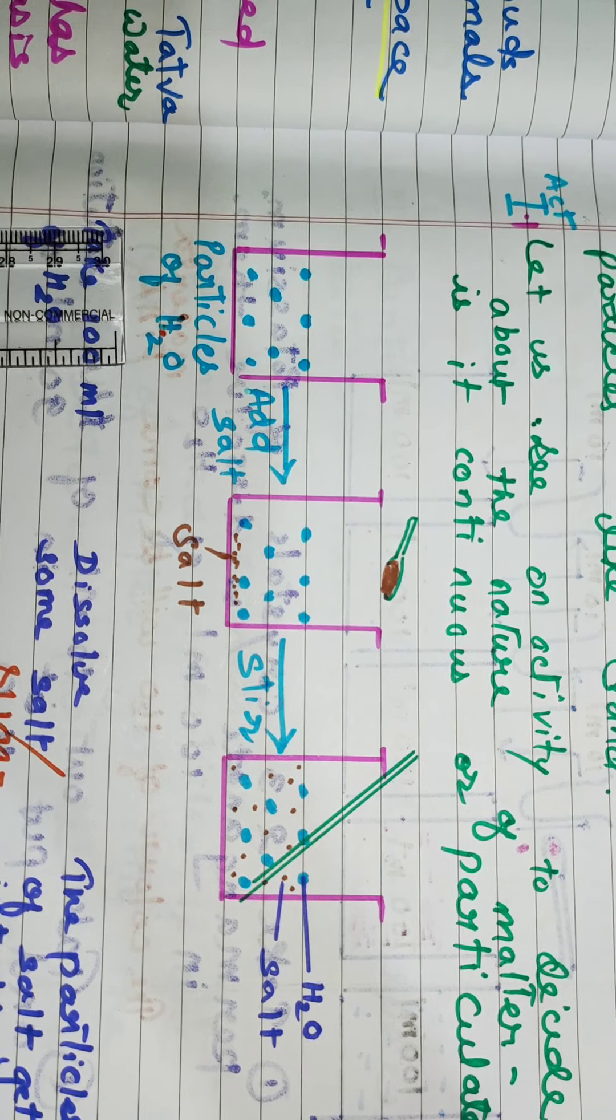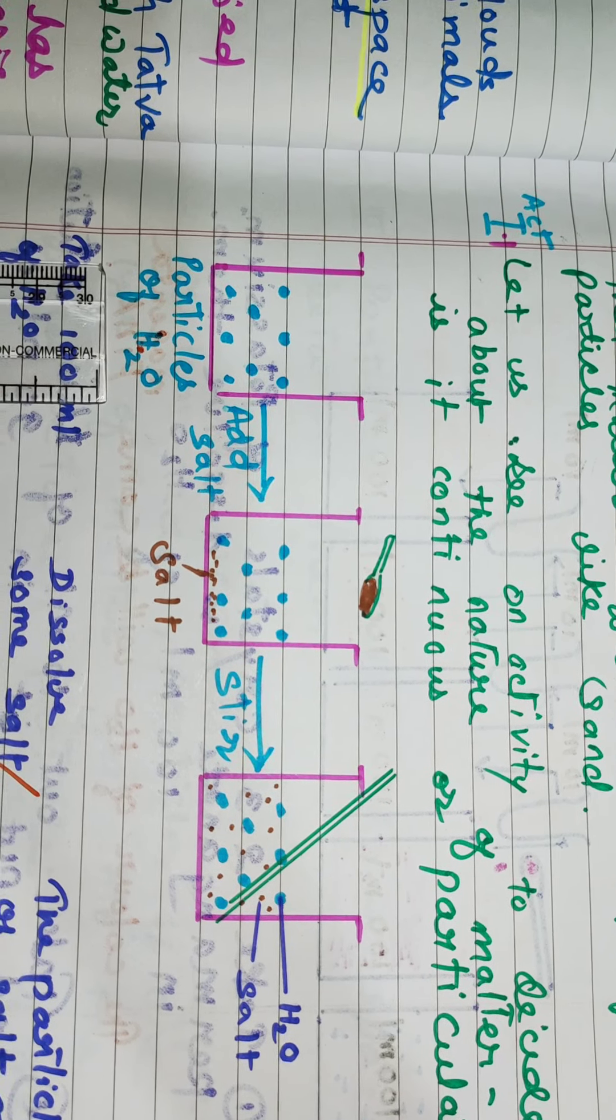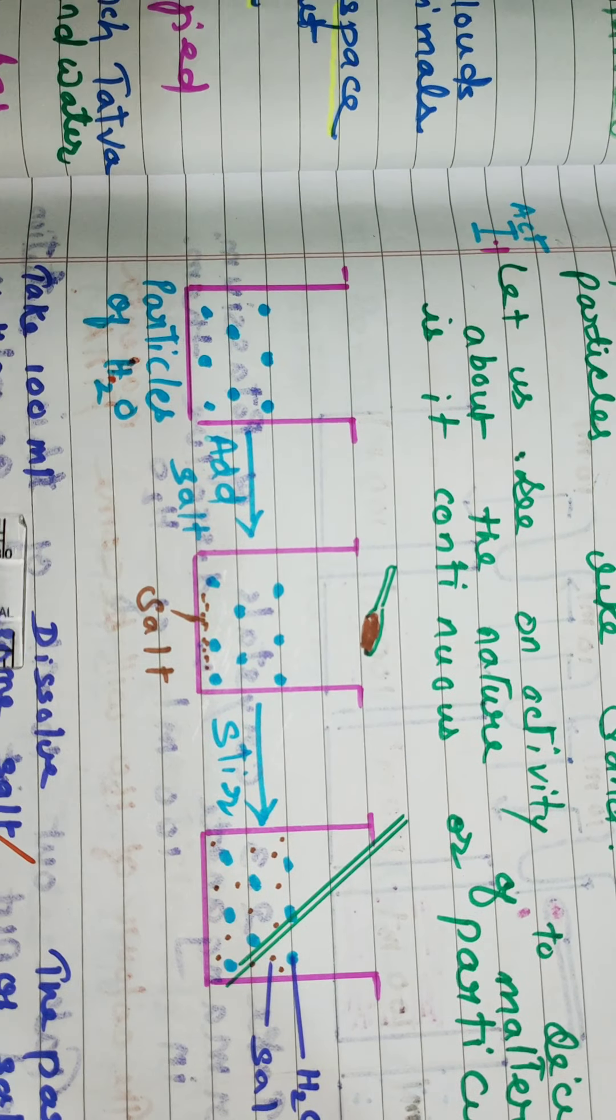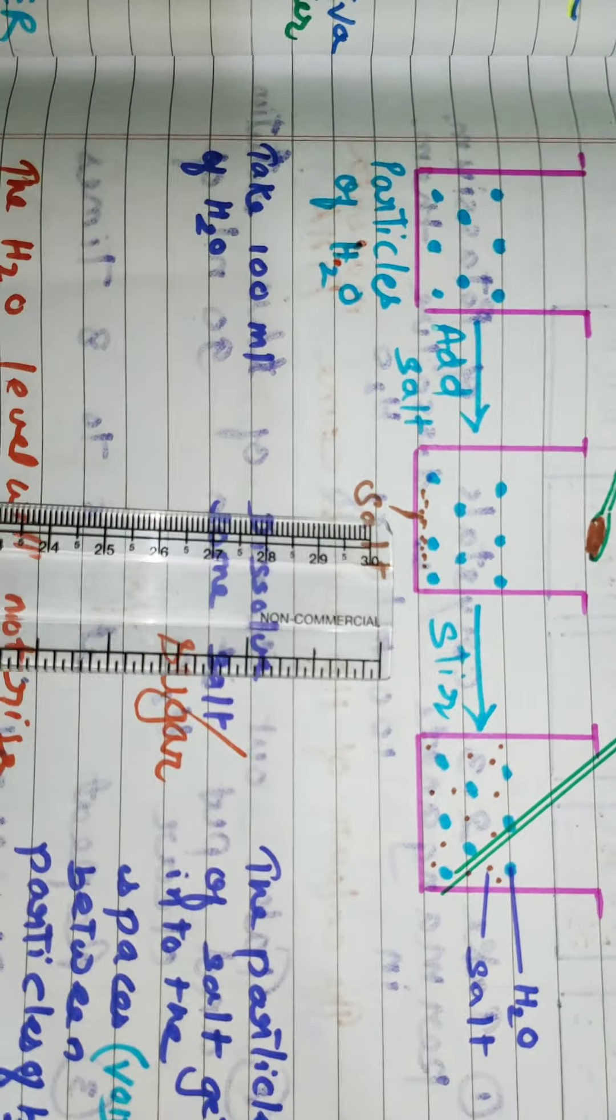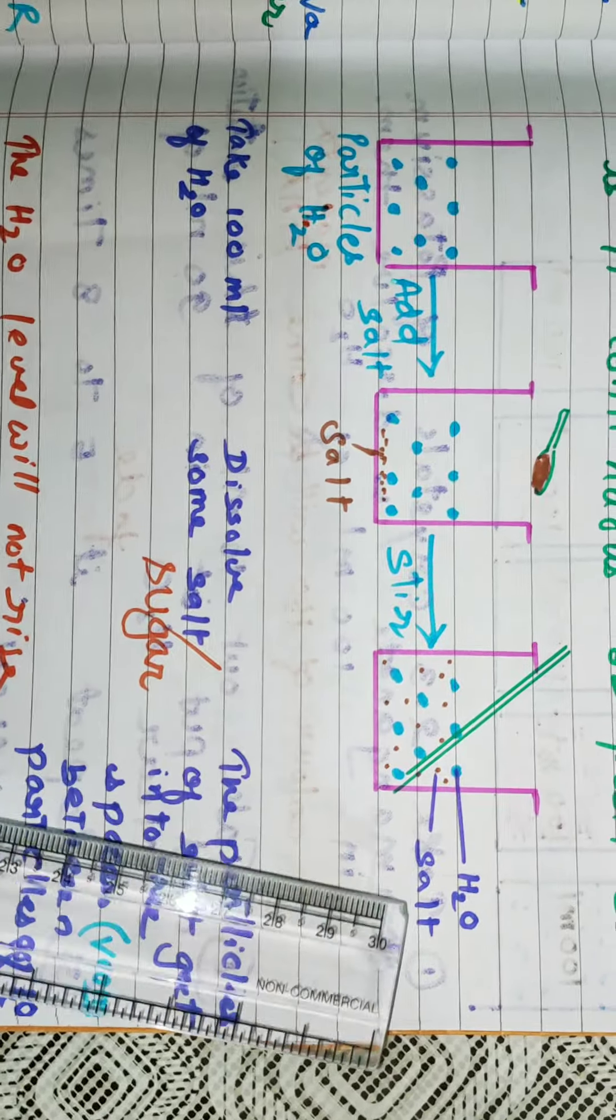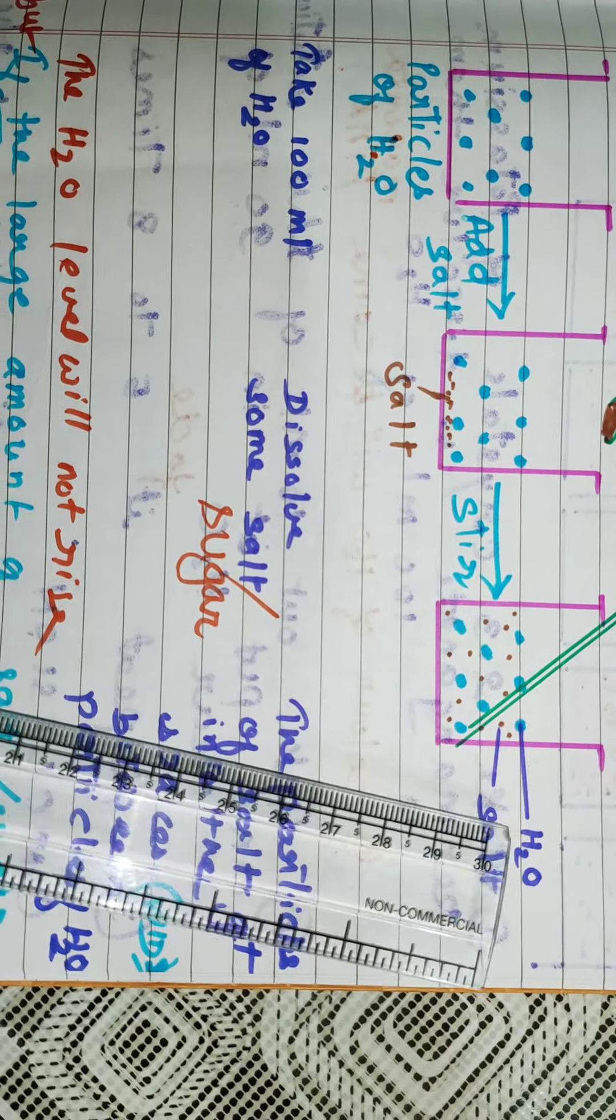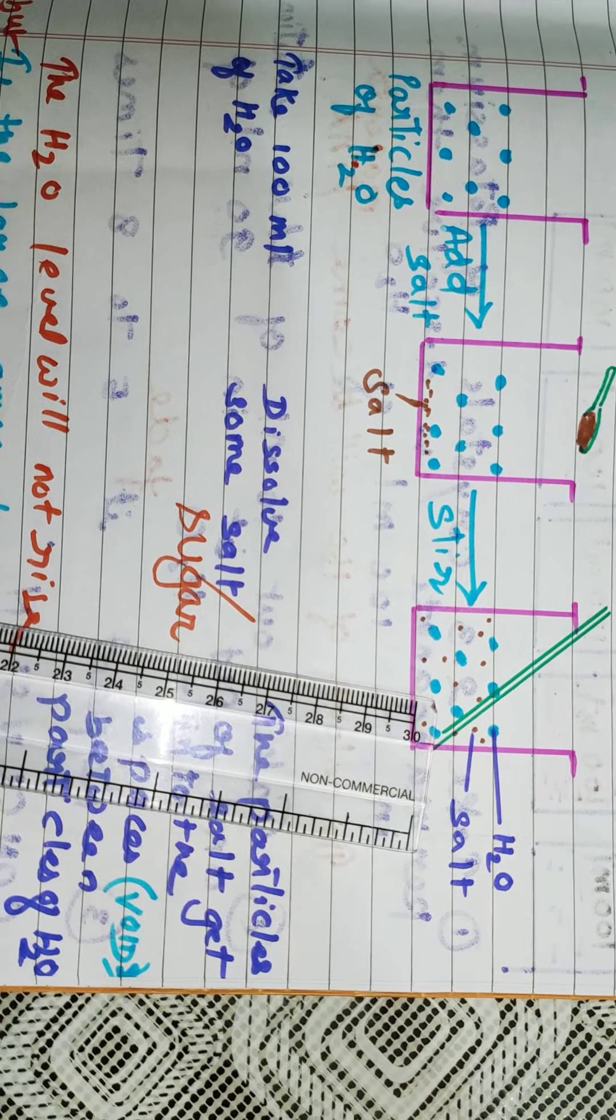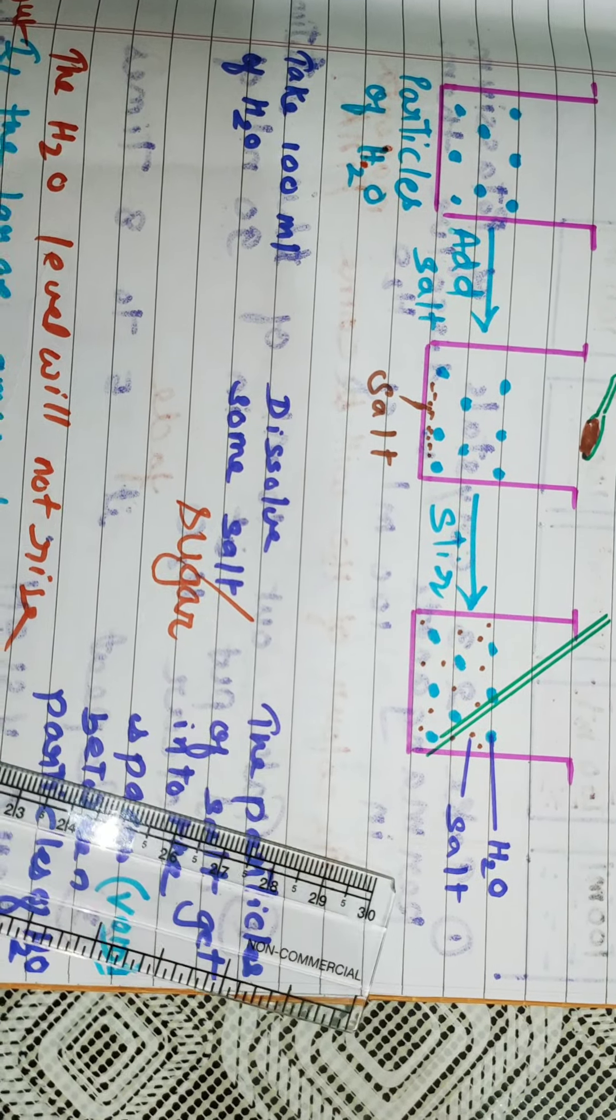Let us see activity 1.1 of your NCERT textbook. Here we will come to know whether matter has a continuous nature or a particulate nature. For this, you have to take 100 ml of water in a beaker and add some salt in it. You can take sugar also. After that, you have to stir it. You will find that there will not be any rise in the level of water.